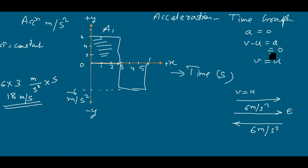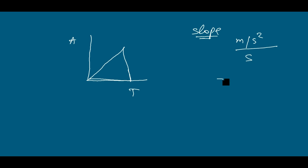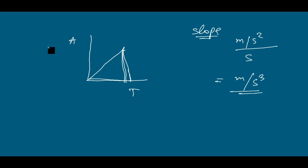Another thing to note: in the case of the velocity-time graph and displacement-time graph, we discussed the slope of the curve. If I calculate the slope of the acceleration-time graph, the unit becomes meter per second squared divided by second, which is meter per second cubed. This unit has no physical quantity in linear motion, so the slope of the acceleration-time graph is meaningless.